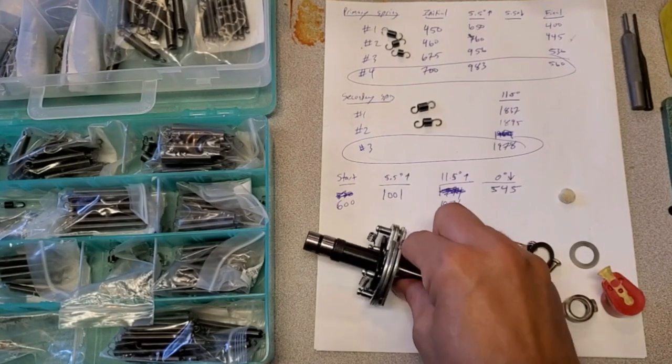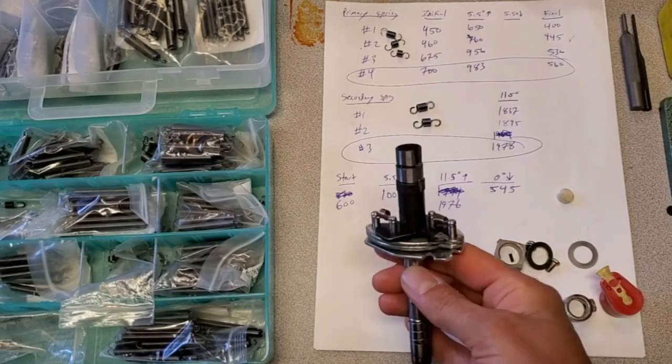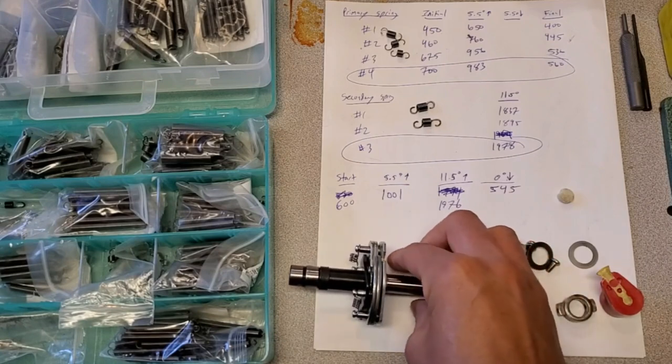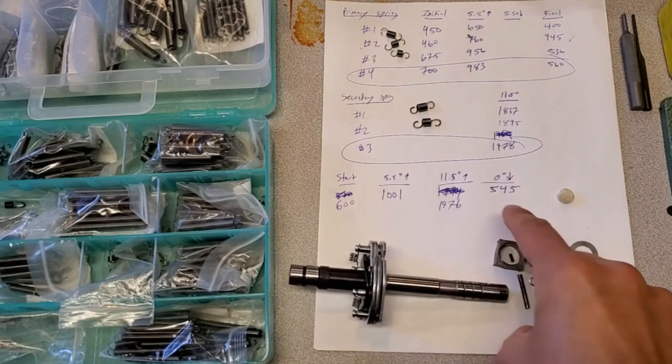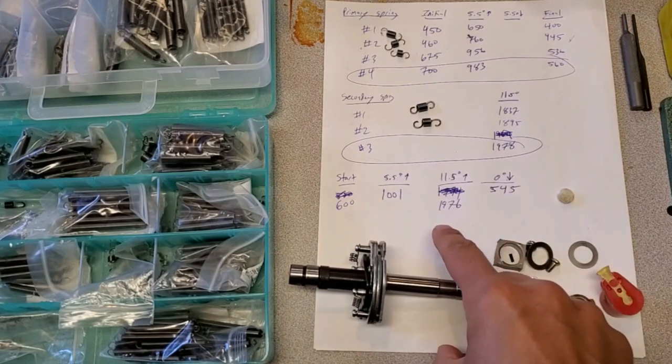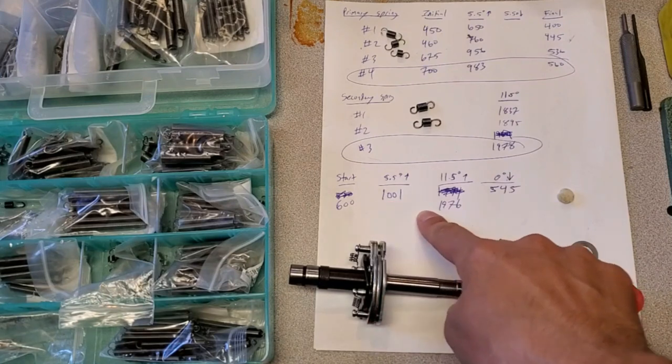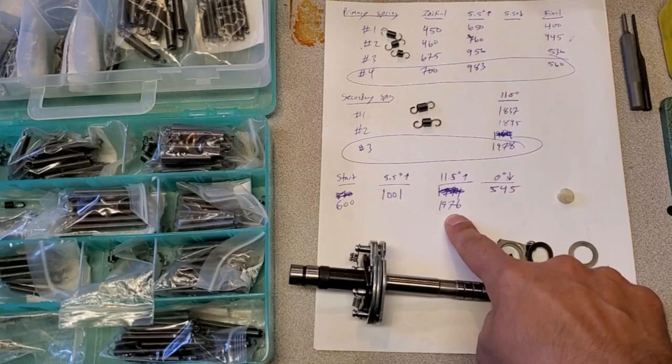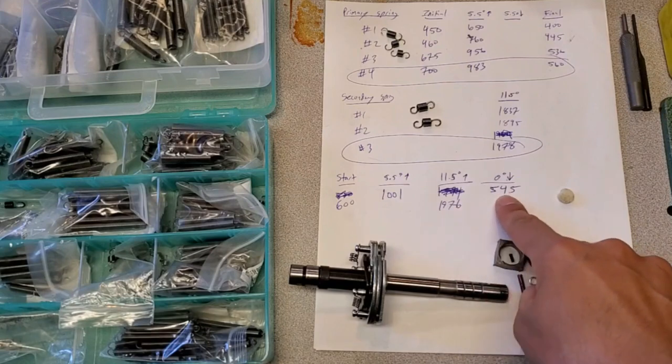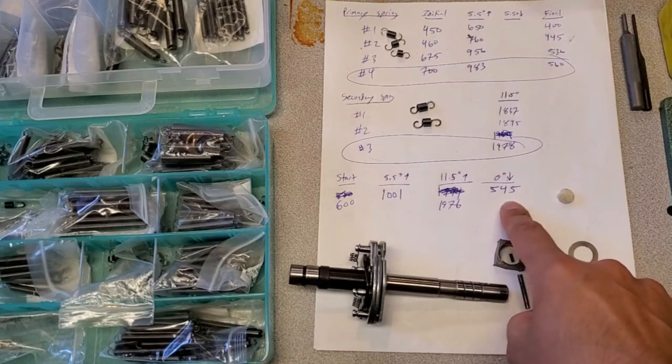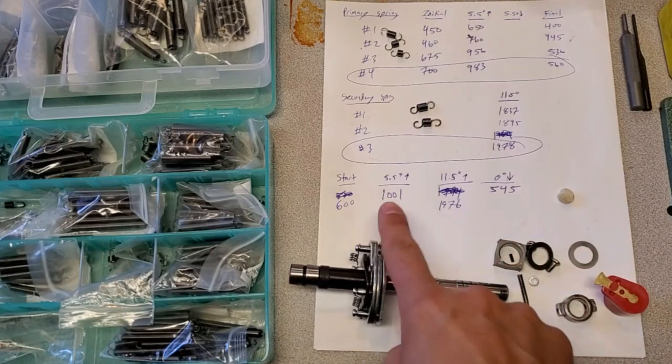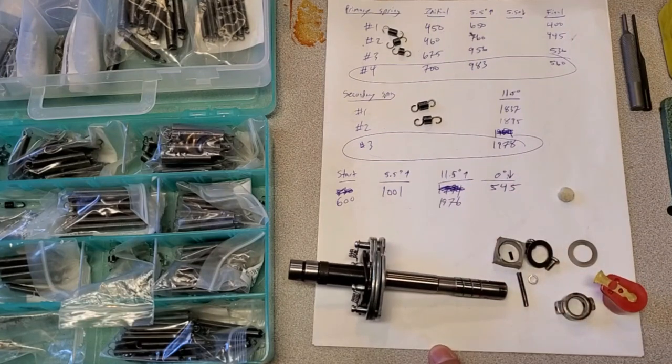I've finished testing and I've reinstalled these two springs into this distributor. The last thing I do is I always run it through one more time to measure the final numbers. This distributor hits 5 and a half degrees at 1,000 RPMs, 1976 at 11 and a half, that's full advance, and then returns back to 0 at 545. These are the specs that were provided by the customer, and this distributor now matches those conditions. I'm going to reassemble this and get it sent off to the customer.